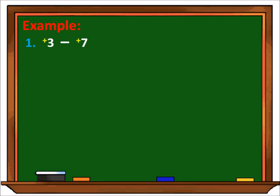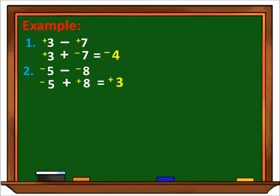Number 1: positive 3 minus positive 7. Copyin natin yung una — positive 3. Then from minus, gagawin natin plus. From positive 7, gagawin natin negative 7. Then apply natin yung rule in adding integers. Kaya ang sagot natin ay negative 4. Number 2: negative 5 minus negative 8. Copyin natin si negative 5. From minus, gawin natin plus. From negative 8, gawin natin positive 8. Then apply natin yung rule in adding integers. Negative 5 plus positive 8 — answer is positive 3, dahil mas malaki yung 8, kaya ang ginamit na sign ay positive. Then sinubtrak lang natin yung dalawang absolute value na integers.